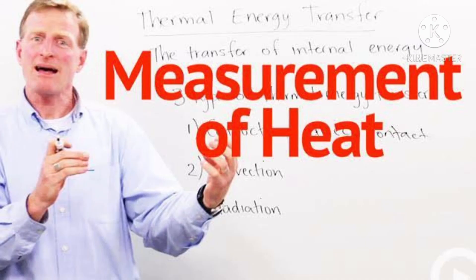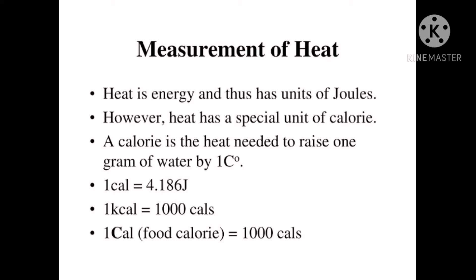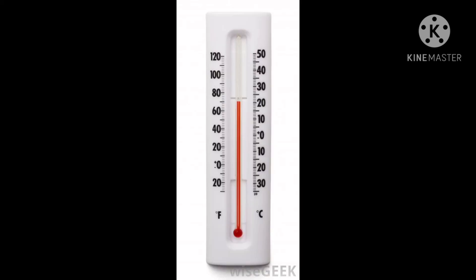Now we are going to see the measurement of heat. Heat is an energy whose effects cause the temperature of an object to increase. 1 calorie is the amount of heat that increases the temperature of 1 gram of water by 1 degree Celsius. As you can see in this picture, 1 calorie equals 4.186 joules. This is also stated as the amount of heat that raises the temperature of 1 kg of water by 1 degree Celsius.